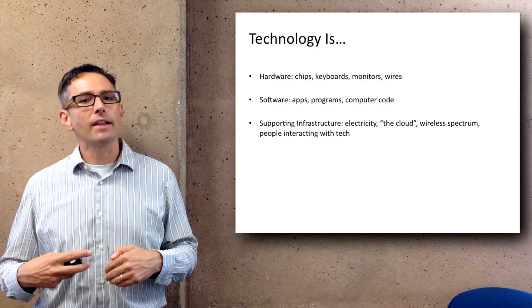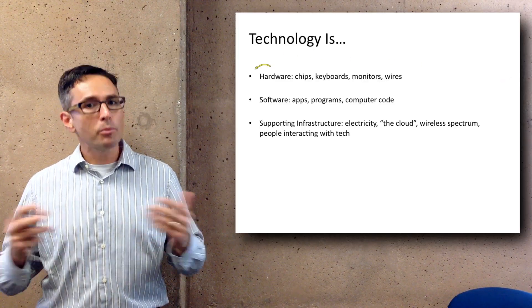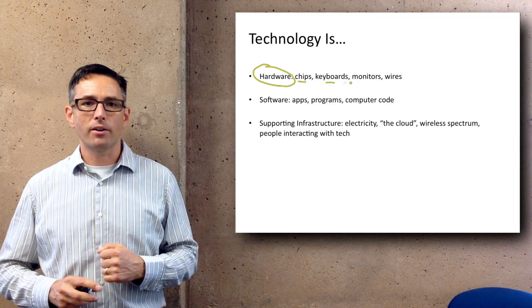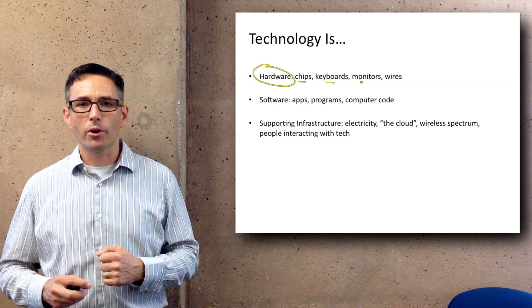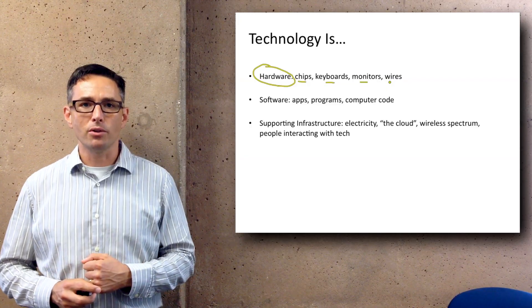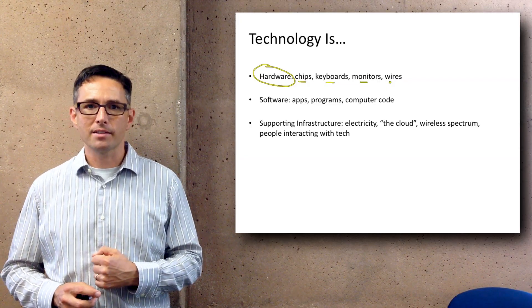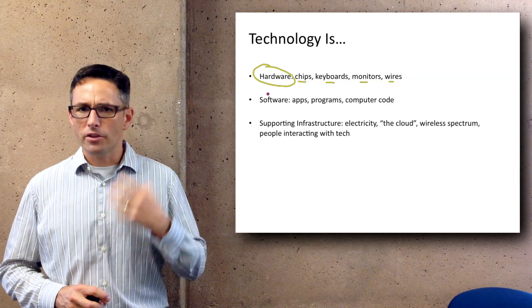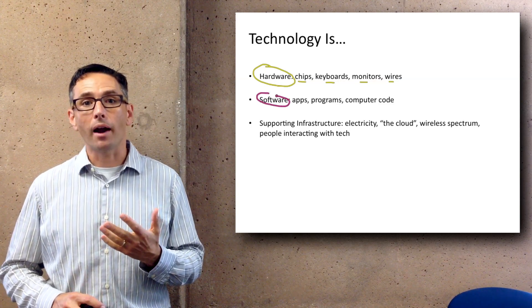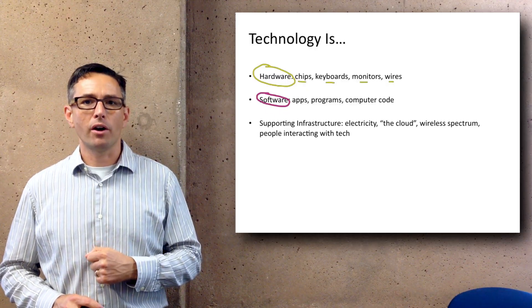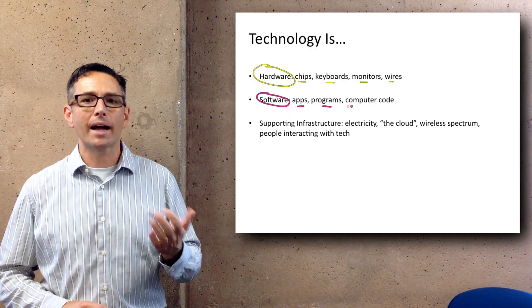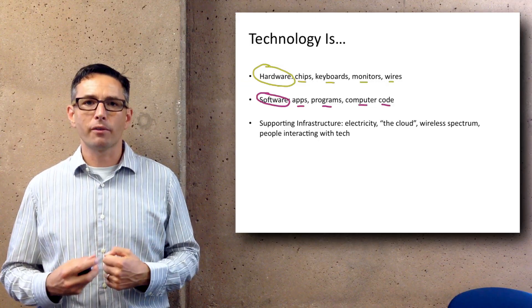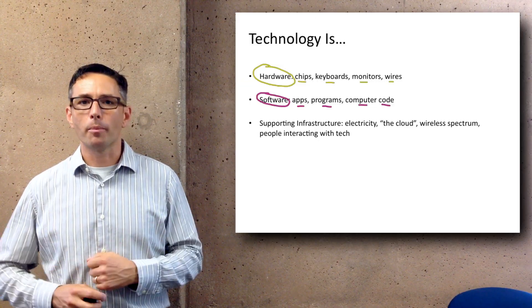When we talk about technology in this class, we're really focusing on information technology, but we take a broad view of it. Obviously we have the hardware aspects — the computer chips in laptops and phones, the keyboards we type on, the monitors we view things on, the displays in embedded devices, the wires that connect those devices. That's all the hardware — the physical stuff that makes up information technology. There's also the conceptual part: the software. These are the apps you download onto your Android phone, the programs you run on your Mac laptop — the computer code written by people that becomes the instructions for how information technology is used on a general purpose computing platform.